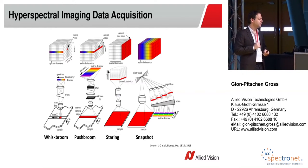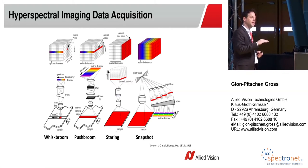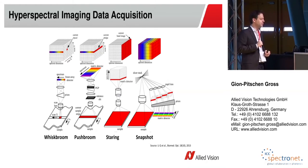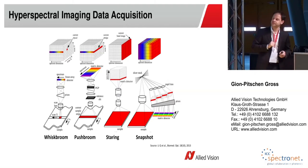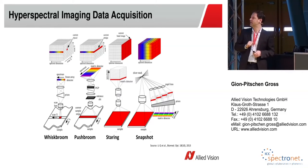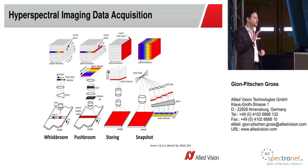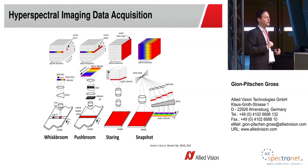Yet another method is the staring method, where I take picture by picture, each with a different filter, building the image stack filter by filter. Lastly, there is also the snapshot method, where in just one shot I get both the spatial and spectral information — this usually requires quite a sophisticated arrangement of mirrors and lenses.